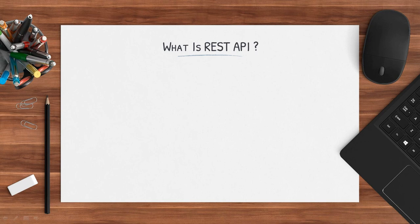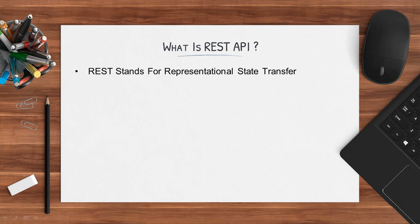Before we start, you need to understand what REST API is. REST stands for Representational State Transfer. In a traditional web application, say for example if you worked with JSP, we have doGet and doPost. Inside that we get the data and also populate the HTML. That HTML along with the data is rendered in the browser for the end user. So basically from our servlet we are returning HTML plus data as the response — that is how traditional web applications work.